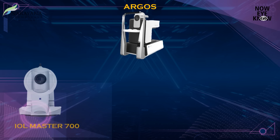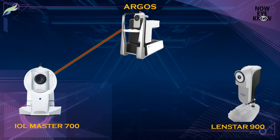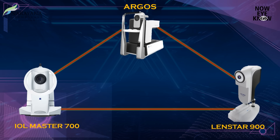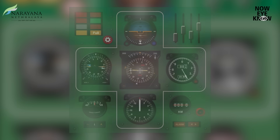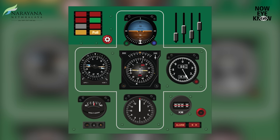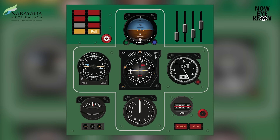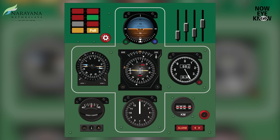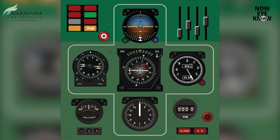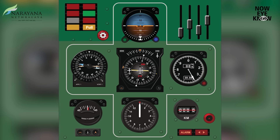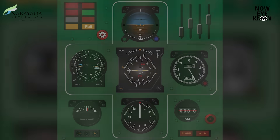Here at Narayan Netralaya, we run a comprehensive set of tests before planning your cataract surgery, just to make sure that post-operatively we give you a perfect 6/6 vision. To summarize, this approach of selecting the best quality scans from multiple machines is similar to how a pilot collects data from multiple dials in the cockpit — using multiple parameters to maintain accuracy and precision even at supersonic speeds. Thank you.